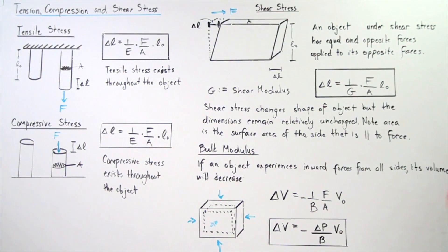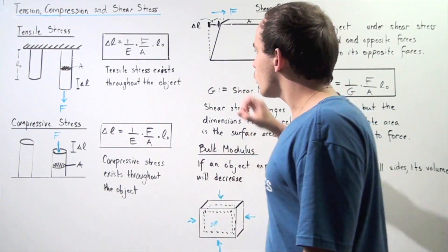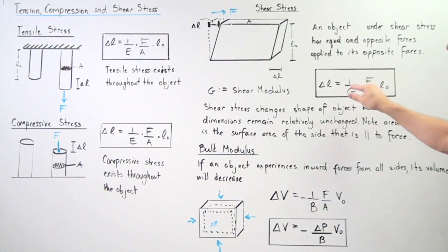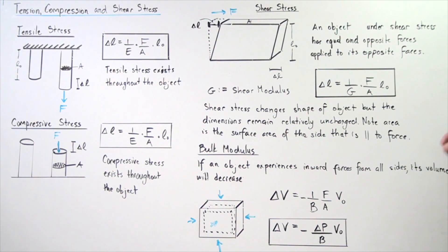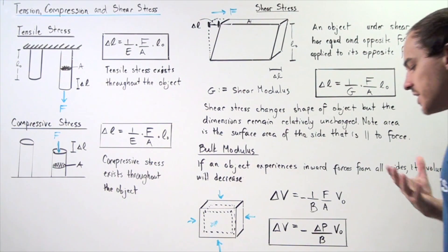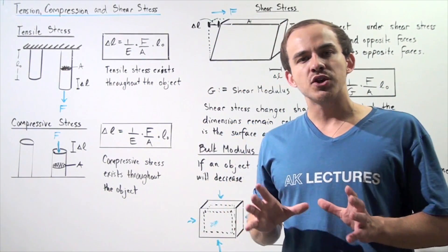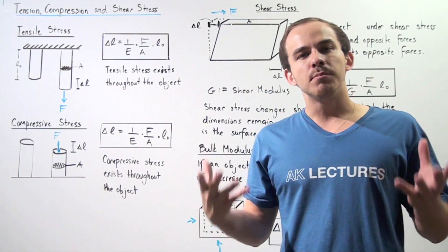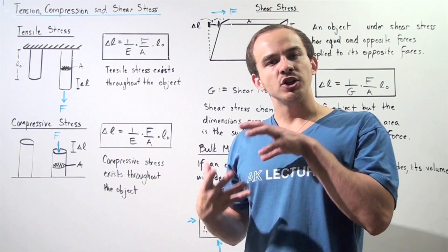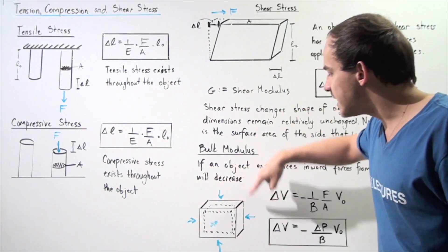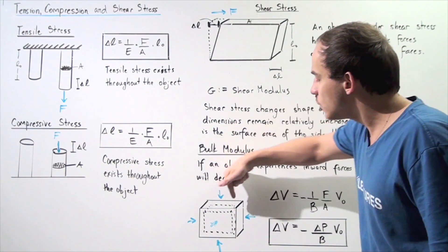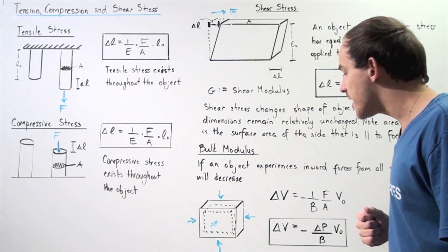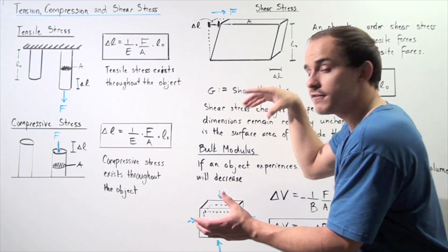Now let's look at another concept known as bulk modulus. So far we spoke about Young's modulus E and shear modulus G. Now let's talk about a third type of modulus — bulk modulus. If an object experiences inward forces from all sides, its volume will decrease. A very common example is submerging an object into a fluid — if we take a balloon and submerge it into a fluid, the volume of that balloon will decrease. The fluid creates a pressure — a force that acts along all the faces of our object — and the volume will change and decrease.